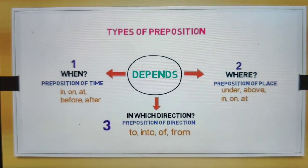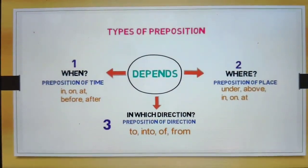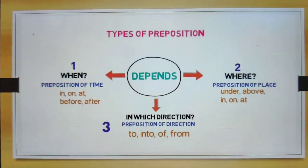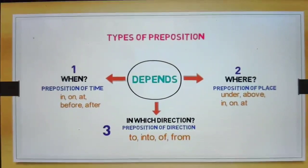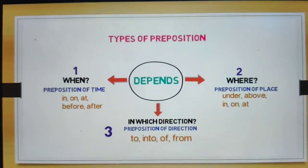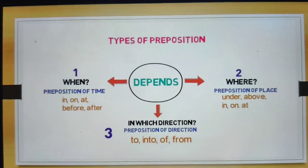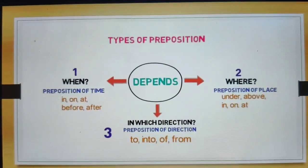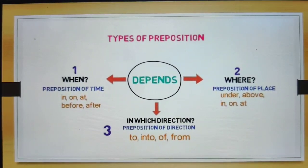Now come to its types. There are three types of prepositions: preposition of time, preposition of place, and preposition of direction.